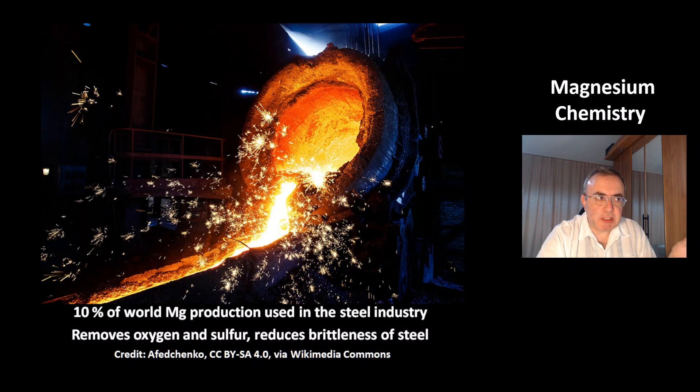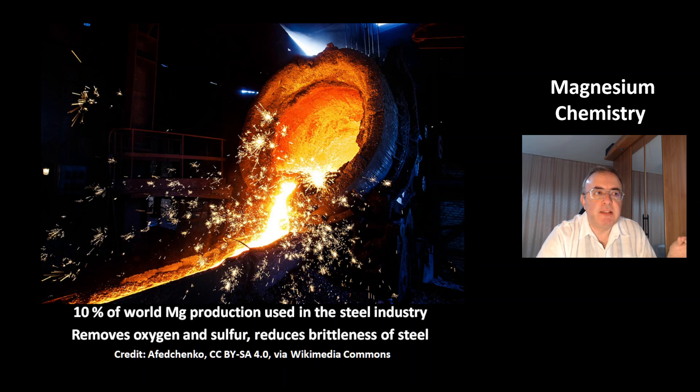10% of the world's magnesium production is used in the steel industry. It is used for removing oxygen and sulfur, and to reduce the brittleness of steel.